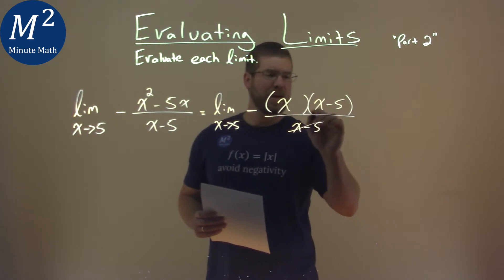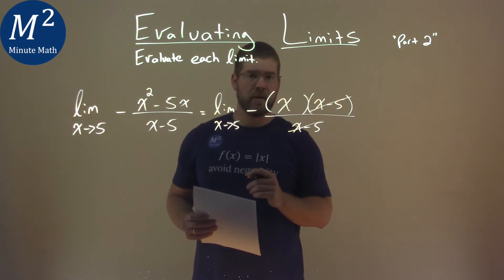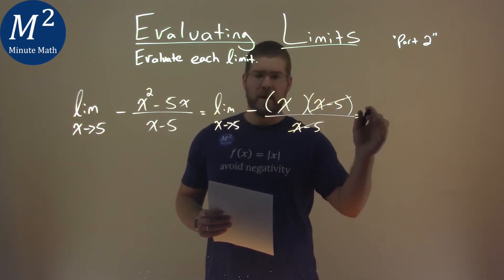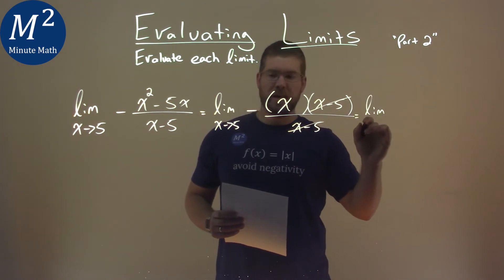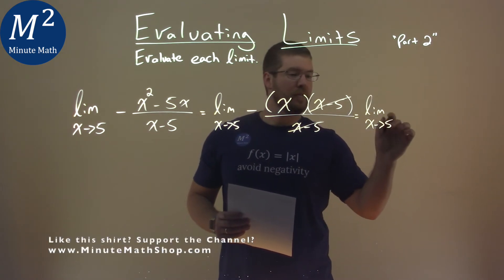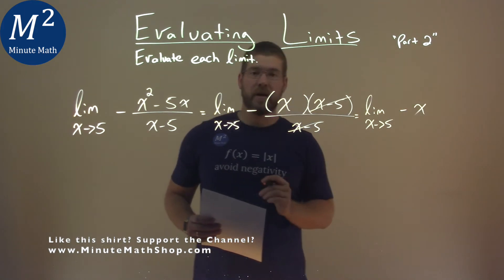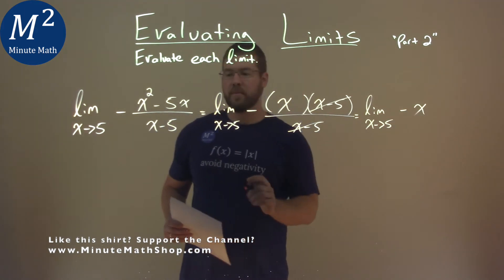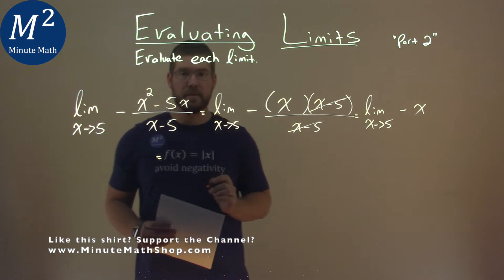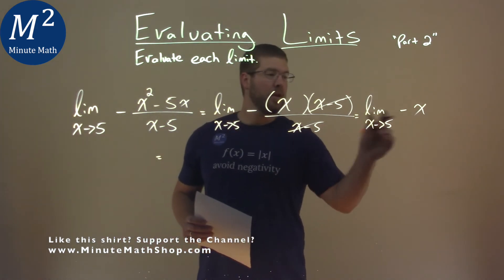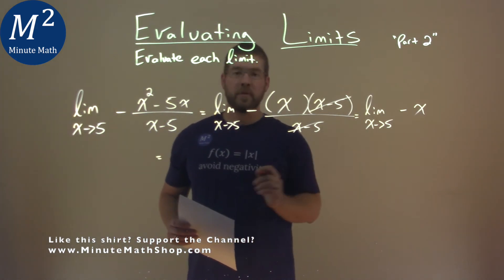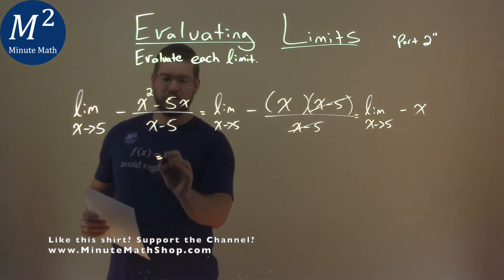The x minus 5s can cancel, we're trying to get something out of that denominator. So with that being said, we have the limit here as x approaches 5 of just a negative x value. And it is at this point we can take that limit. When we take that limit, we can plug a 5 in for that x and we get our answer actually,